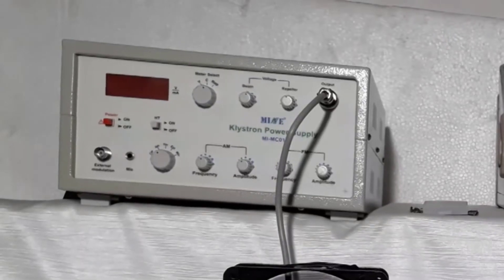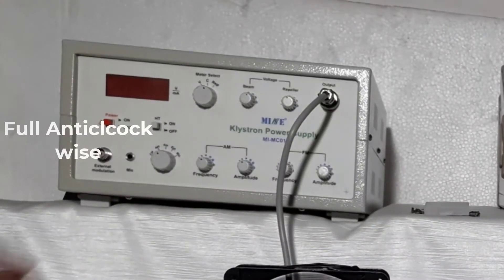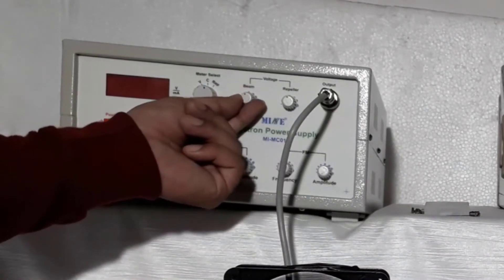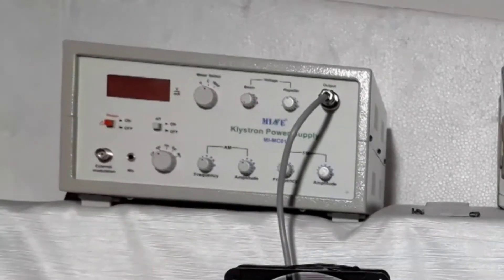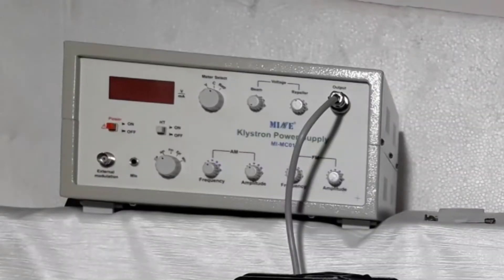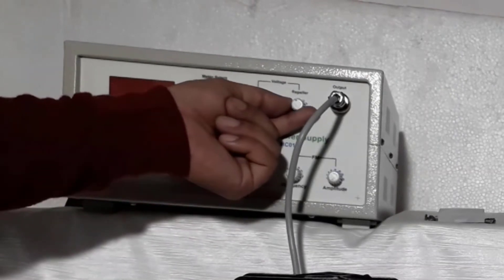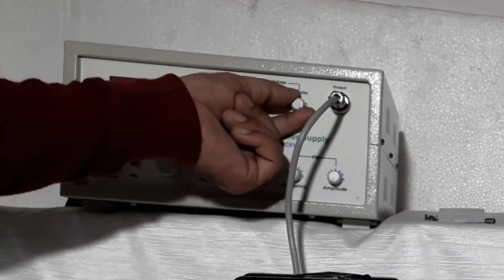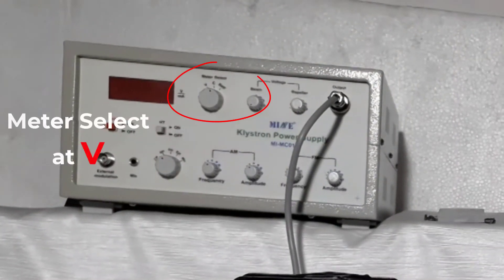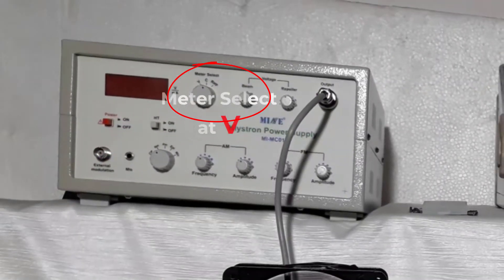Set beam voltage knob at fully anti-clockwise. Set repeller voltage knob at fully clockwise position. Set meter select knob at V, that means beam voltage.